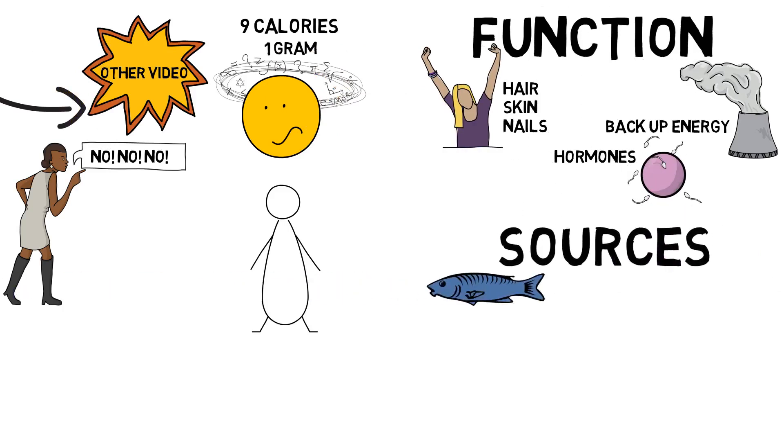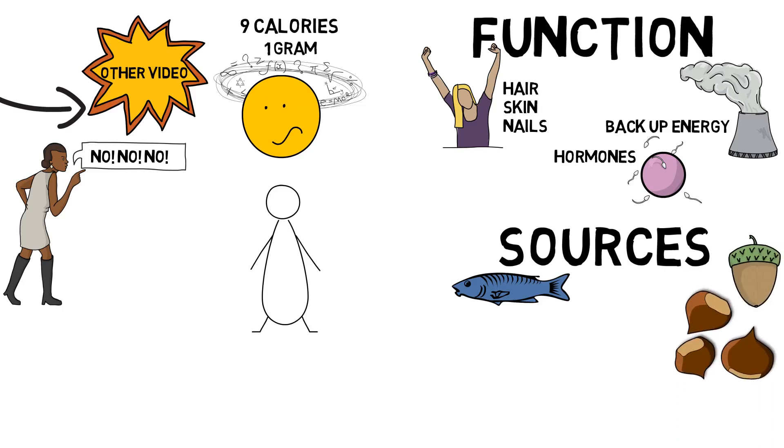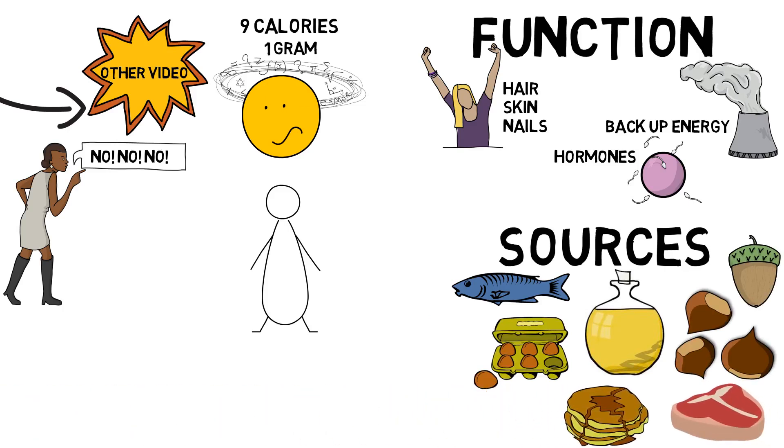Sources of fats can come from fish, nuts, eggs, seeds, cooking oils, certain types of meat like steak, and foods that include butter in the ingredients.